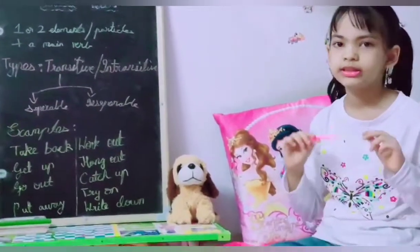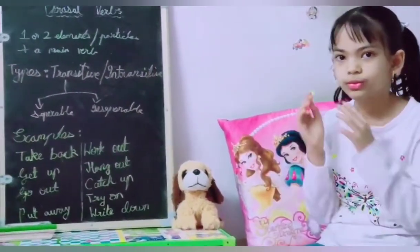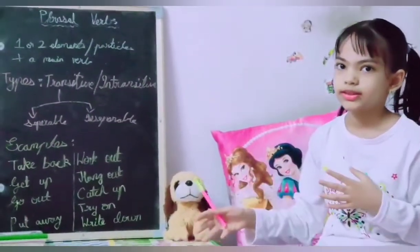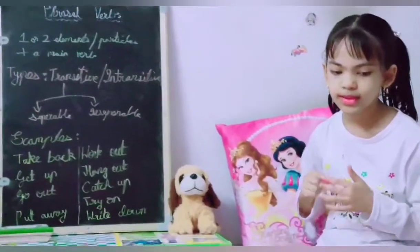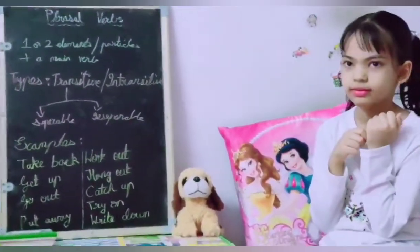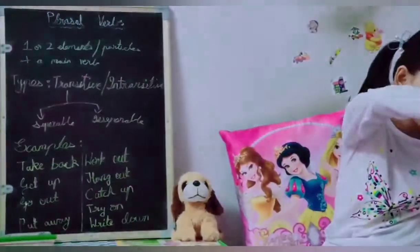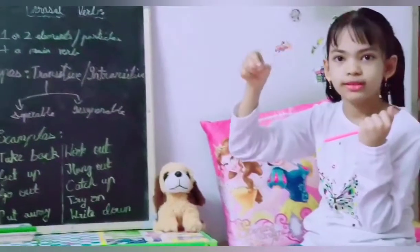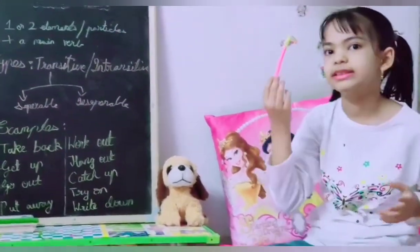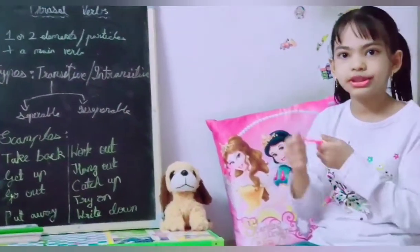'Try on' means to wear something to see whether you want it or not — 'Try this on.' Next is 'write down.' It doesn't mean writing on the floor; you're writing somewhere like in a notebook. 'Write your name down.' It is separable, so we can also say 'Write down your name.'